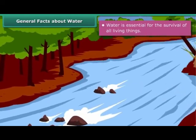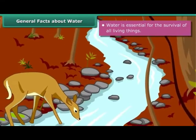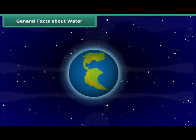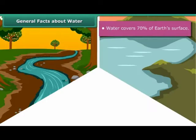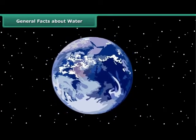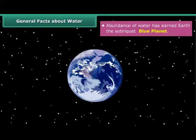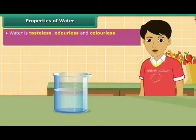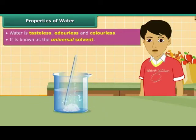Water is essential for the survival of all living things — plants, animals, human beings and other life forms. It covers 70% of our planet in the form of rivers, ponds, oceans and streams, making Earth appear blue in color when seen from space. This abundance of water has earned Earth the sobriquet 'blue planet.' Water is tasteless, odorless and colorless, and it dissolves many substances, so it is known as the universal solvent.